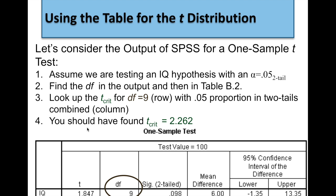Say we're testing an IQ hypothesis and we set the alpha level at 0.05. The null hypothesis says this medicine will have no effect on IQ. Since an effect could increase or decrease IQ, it's going to be a two-tailed test. Alpha 0.05, two-tail. We only have 10 people in this study, so our degrees of freedom is 9. You should find that the T crit, or critical value of T, is 2.262. In this case, T obtained is 1.847, so we would fail to reject the null.